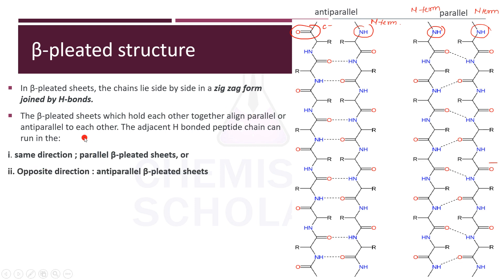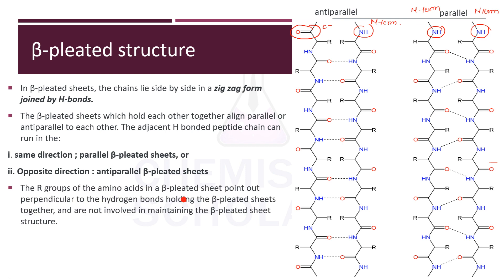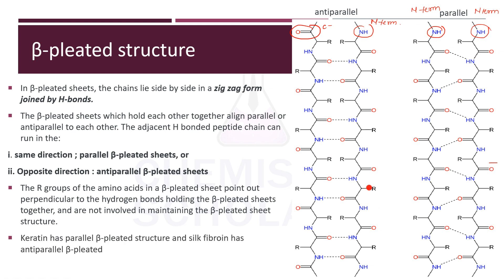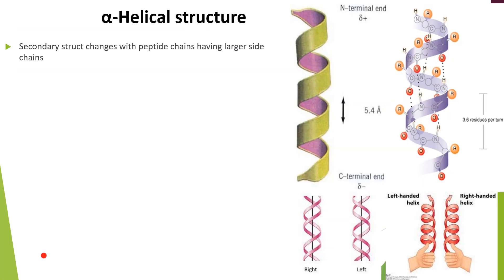In the beta-pleated structure, chains can align parallel — all CO groups on the same side — or anti-parallel. Simply put, when the N-terminal of one chain is in front of the C-terminal of another it is anti-parallel; when N-terminal faces N-terminal it is parallel. The R-groups of amino acids all lie outside, so they don't participate in hydrogen bonding and crowding is reduced. An example of beta-pleated structure is keratin, which has parallel beta-pleated structure, while silk fibroin has an anti-parallel structure.